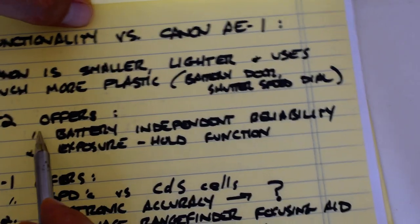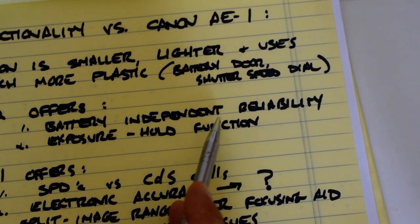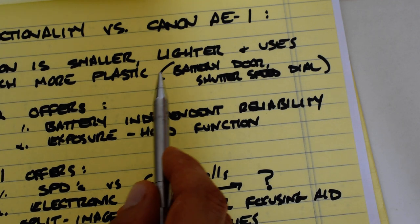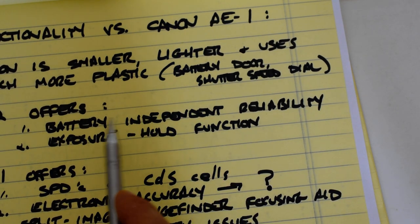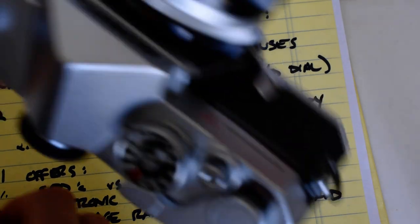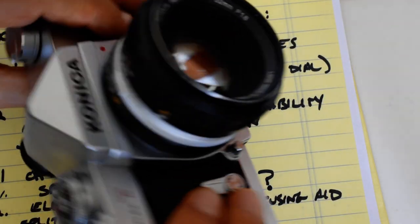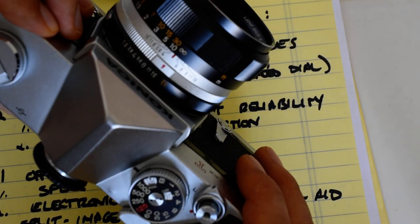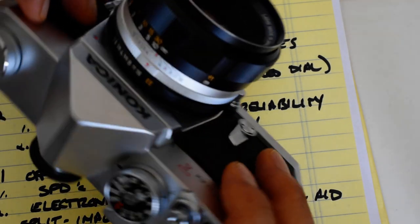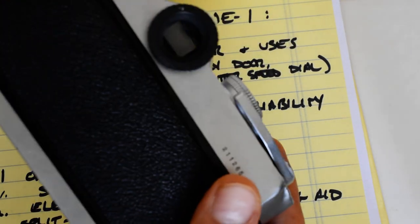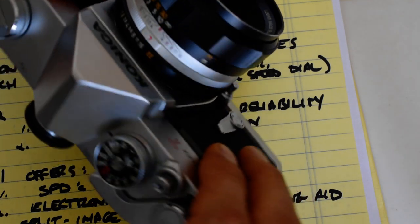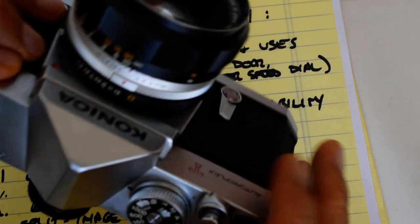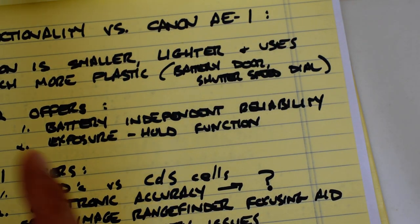The T2 offers battery-independent reliability. On an AE-1, if the battery ain't working, you got yourself a paperweight. It's not even heavy enough to use as a doorstop. Whereas the Autoreflex is perfectly usable without a battery. Again, I have not put batteries in this. I did when I initially bought it just to see if the meter was anywhere close to accurate. It wasn't, so I just haven't bothered getting the meter calibrated. It's not worth the hassle in my opinion. I've been using this thing meterless, which means I just don't put batteries in it, and it works just fine. All functions other than the automatic exposure system and the light meter work just fine.